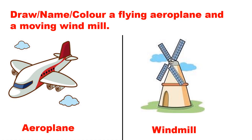Now children, let us do some drawing and written work. I know you all love to draw. On the blank page, you are going to draw a flying aeroplane — as you know, air helps an aeroplane to fly. And you will draw a moving windmill, because air helps a windmill to move.